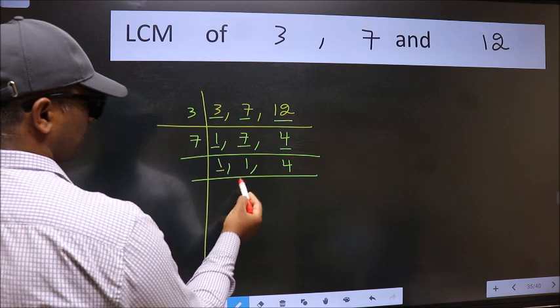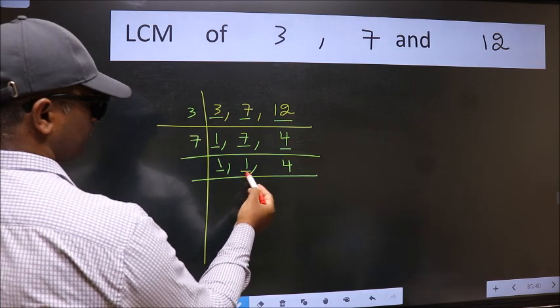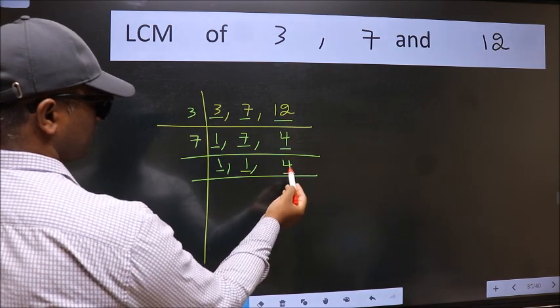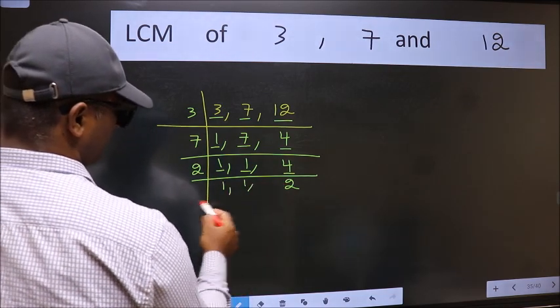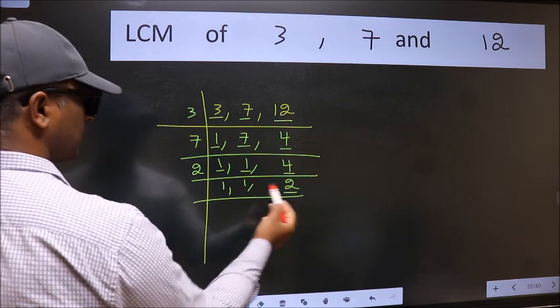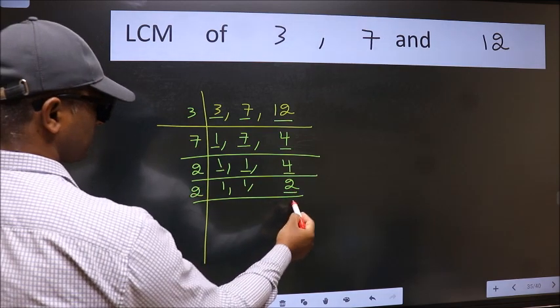Now we got 1 here and here. So focus on the next number 4. 4 is 2 times 2. Now here we have 2, 2 is a prime number so 2 divides 2.